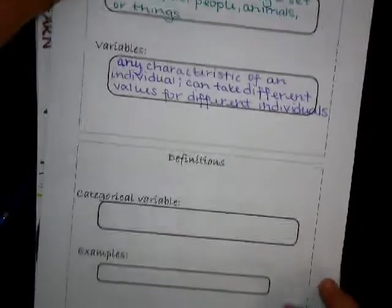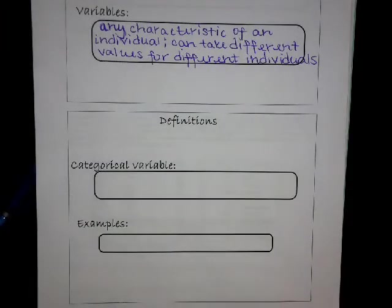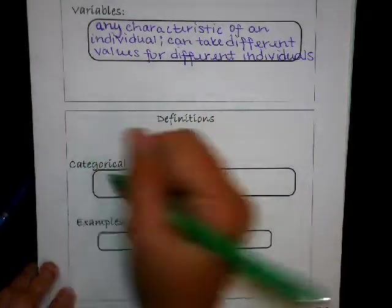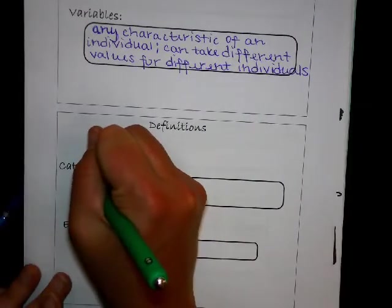So we have two different variables that we're going to define today. The first one is categorical variable, which places individuals into one of several groups or categories.